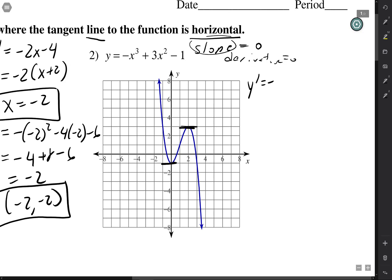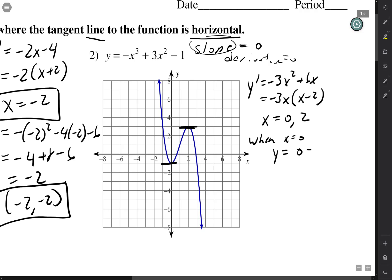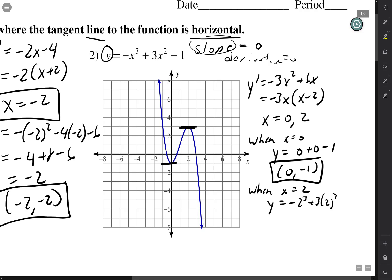We take the derivative again: y prime equals negative 3x squared plus 6x, factored as negative 3x times (x minus 2). This equals zero when x is 0 or x is 2. For the ordered pairs: when x is 0, y is 0 plus 0 minus 1, giving the point (0, −1). When x is 2, plugging back in: negative 2 cubed plus 3 times 2 squared minus 1 equals negative 8 plus 12 minus 1, which is 3. So the point is (2, 3). Both check out on the graph.